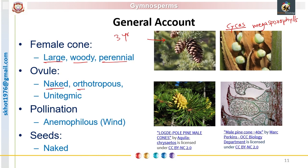In Cycas, the female cones are loosely arranged and called megasporophylls. The ovules are naked, orthotropous in nature, and unitegmic. The mode of pollination is anemophilous, meaning they are pollinated by wind. No specific pollinator — insect, bird, bat, or animal — is associated with the pollination of gymnosperms, and this is one of the major drawbacks for their restriction.